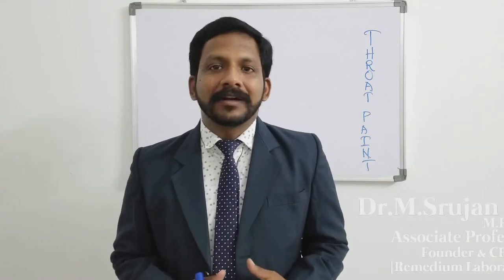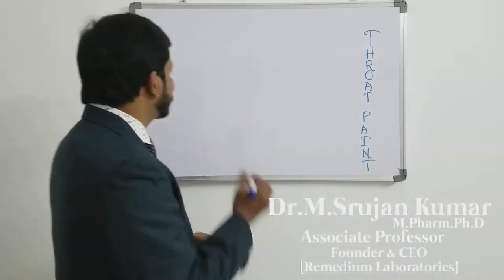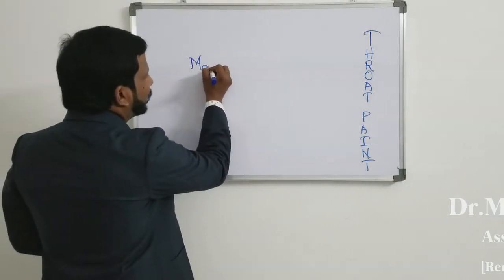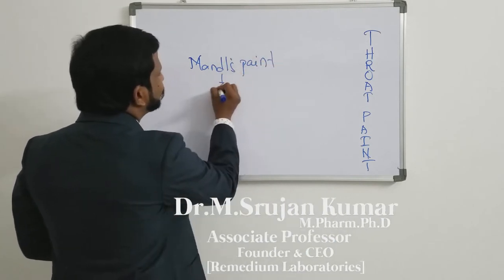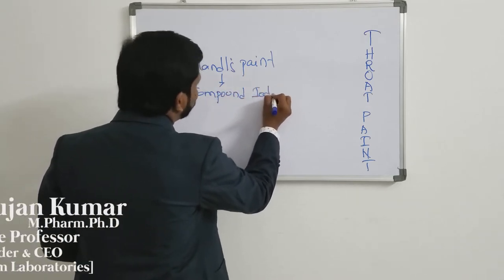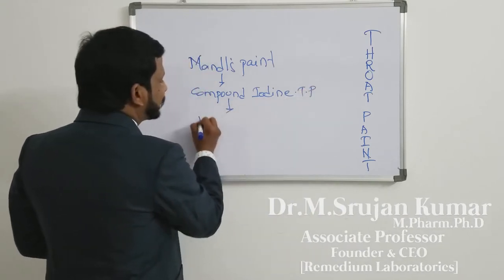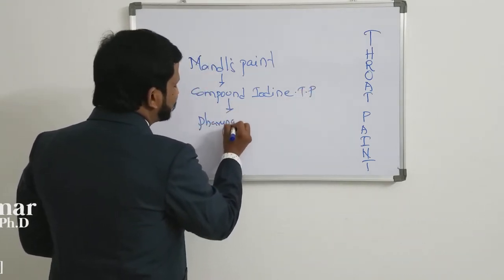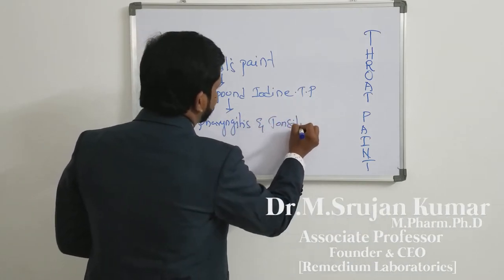Throat paints' viscosity is imparted with the help of an excipient called glycerin. An example of a commonly used and effective throat paint is Mandel's paint. The other name for Mandel's paint is compound iodine throat paint. It is used in the treatment of pharyngitis and tonsillitis.